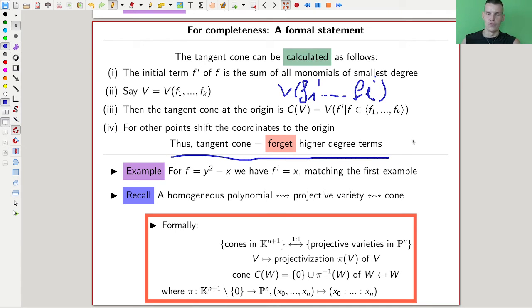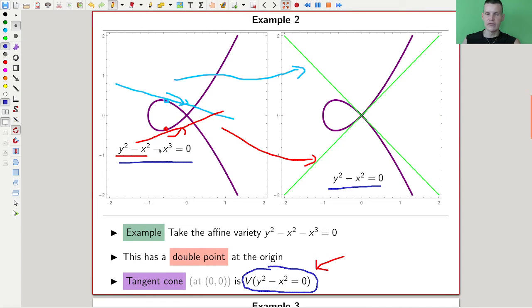It's a really easy way to compute the tangent cone. You might wonder why this actually works. If I just take the polynomials of lowest degree, I clearly get a homogeneous polynomial. You can see it here on this side - homogeneous polynomials correspond to projective spaces.